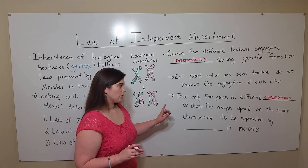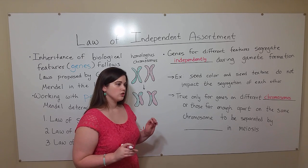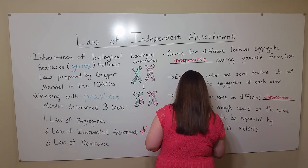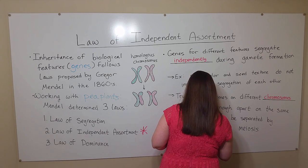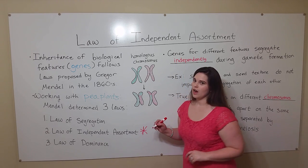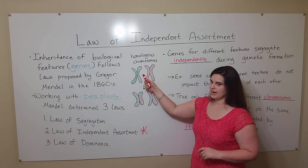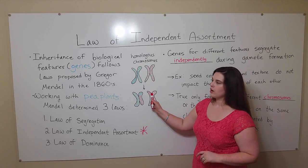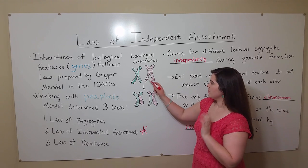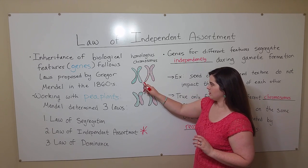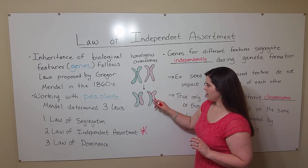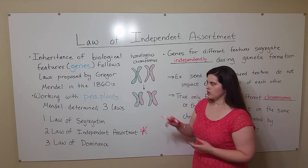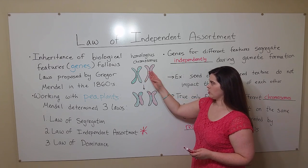It is also true for genes that are far enough apart on the same chromosome to be separated during meiosis by a process called recombination. Recombination occurs when homologous chromosomes line up during prophase one of meiosis, and then they have a crossing over event. So you can see that alleles that had once been on the lower edge of this chromosome are now on the lower edge of this chromosome, and vice versa — you have genetic material switching from one homologous chromosome to the other.